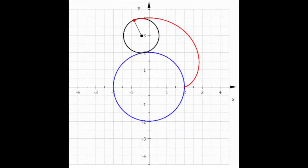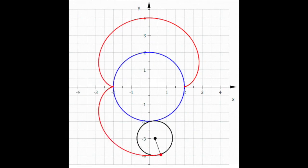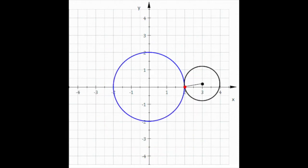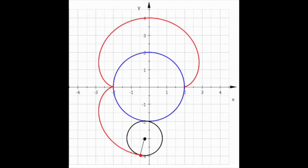The nephroid is the epicycloid formed by a circle of radius A rolling around the outside of a fixed circle of radius 2A. It has a length of 24A, an area of 12 pi A squared, and is given by the parametric equations x equals A times 3 cos t minus cos 3t, and y equals A times 3 sin t minus sin 3t.